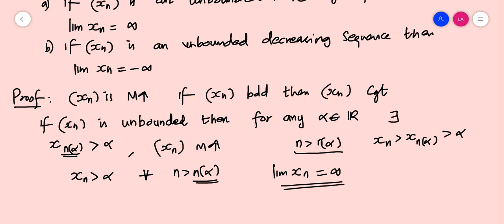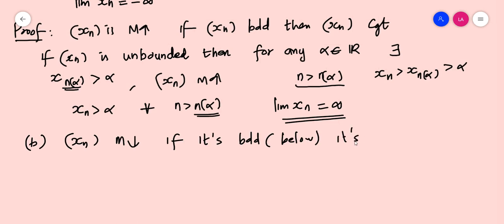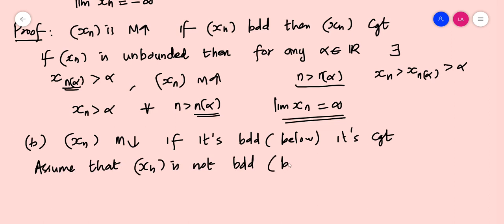Similarly, for part B: let the sequence be monotonic decreasing. If XN is bounded, meaning bounded from below, it converges. Assume that XN is not bounded from below — XN has no lower bound. So for any beta greater than zero, there exists a term XN_beta such that XN_beta is less than beta.